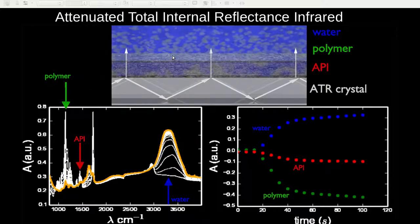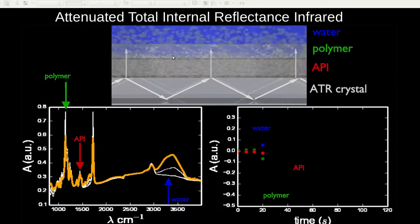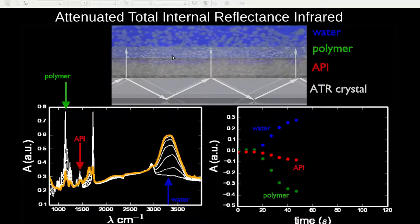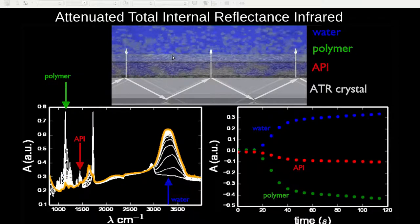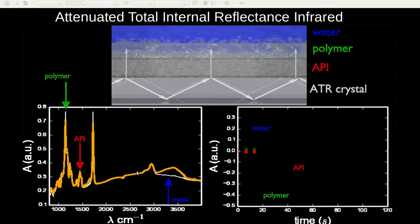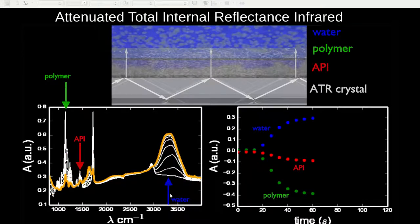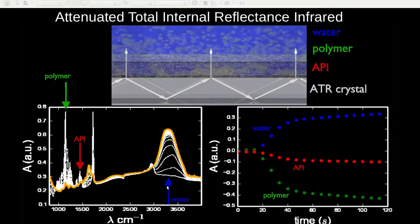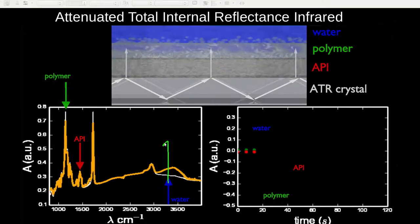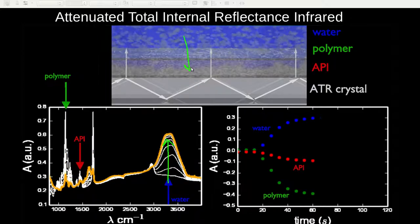The graph on the bottom left shows the experimental data of the absorbance as a function of wavelength for a crizotinib coating on the ATR crystal. We can see that there are three bands that we are focusing on. Bands in the 3400 range are due to water and we see that they grow in over the life of the experiment due to water diffusing into our sample and becoming closer to the crystal interface.